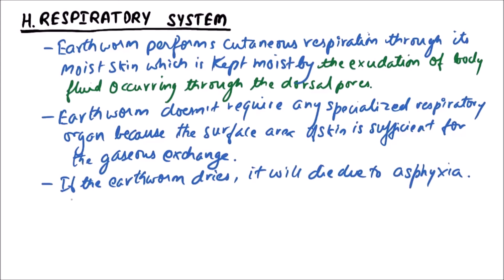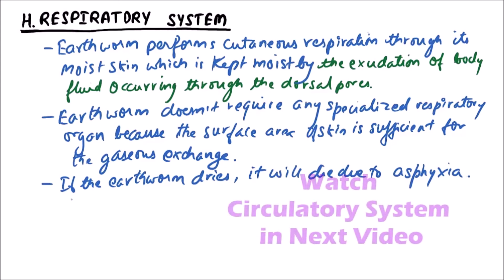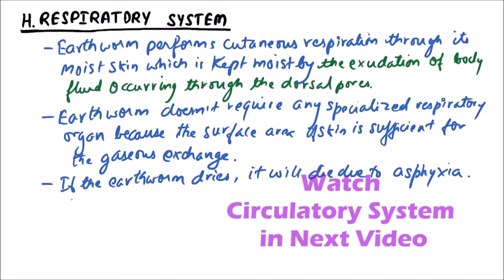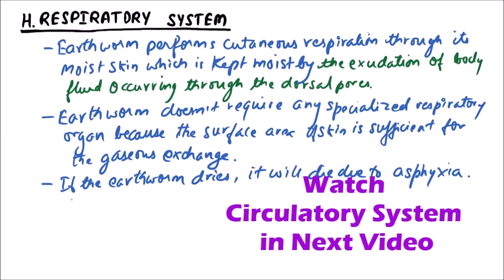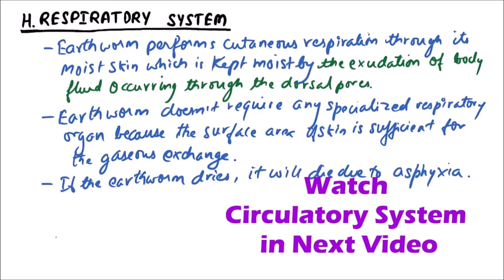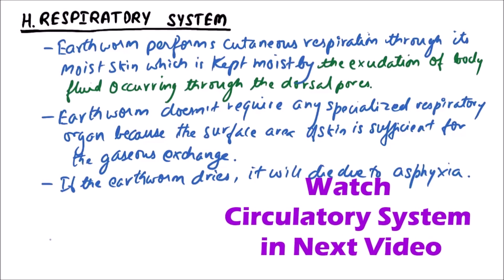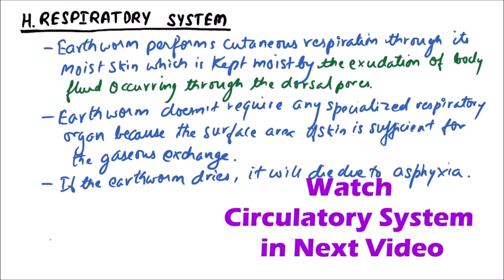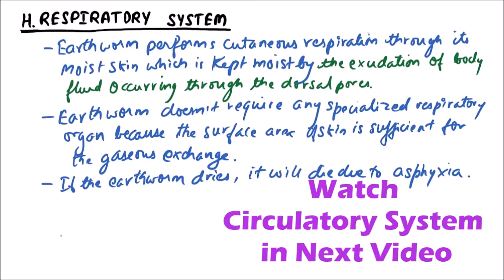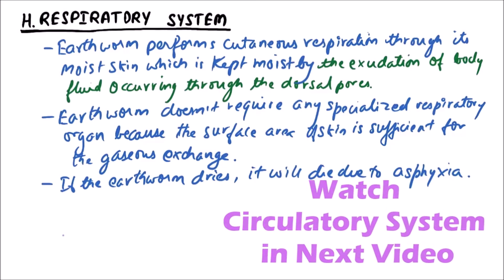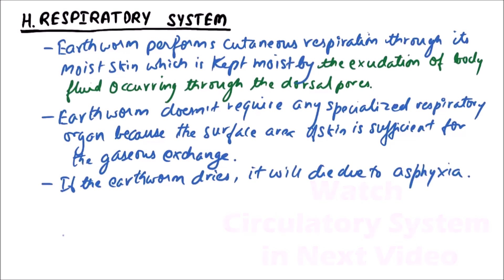One dorsal pore is present on the intersegmental groove starting from the 12th and 13th up to the last but one groove, to secrete mucus to keep the body wall moist. This has been already discussed about the dorsal pore in the previous lectures. So this is the respiratory system of earthworm. Thanks for watching this video.